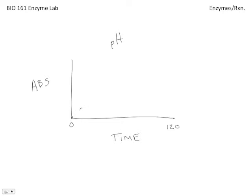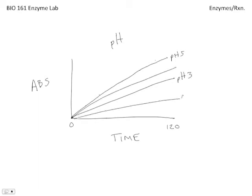And then what you're going to do is you're going to plot out a line that represents your path. Maybe this is pH 5. And then you're going to do another one for the other pH. Maybe this is pH 3. So for each of your experiments, you're going to have a line on this graph.